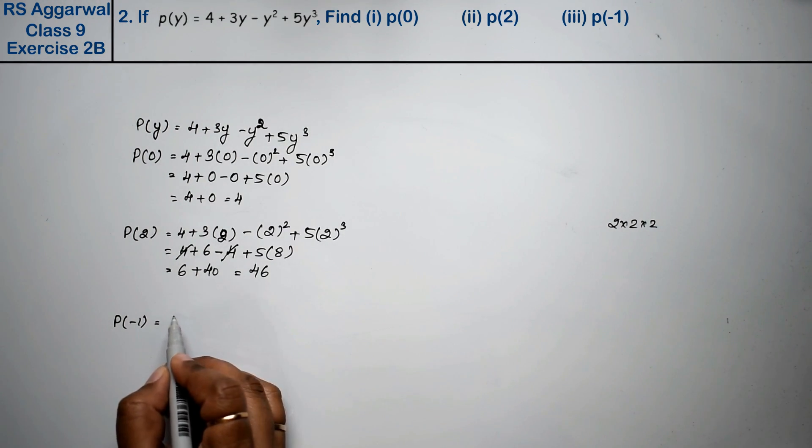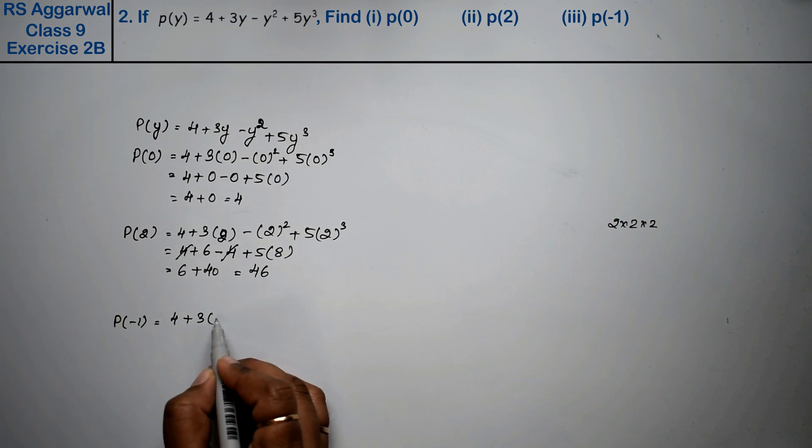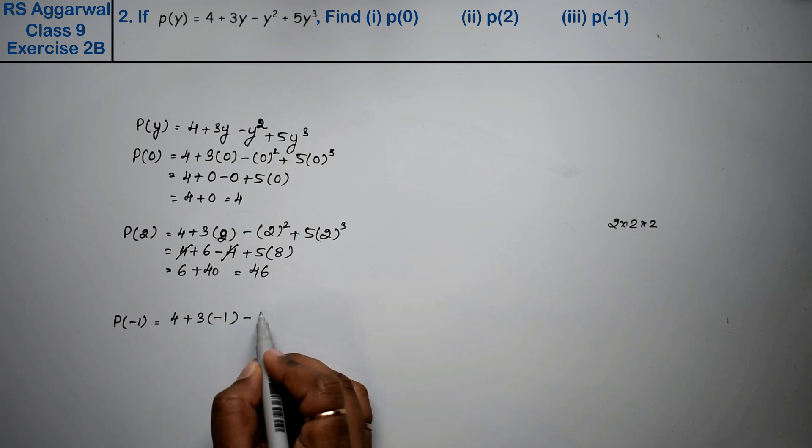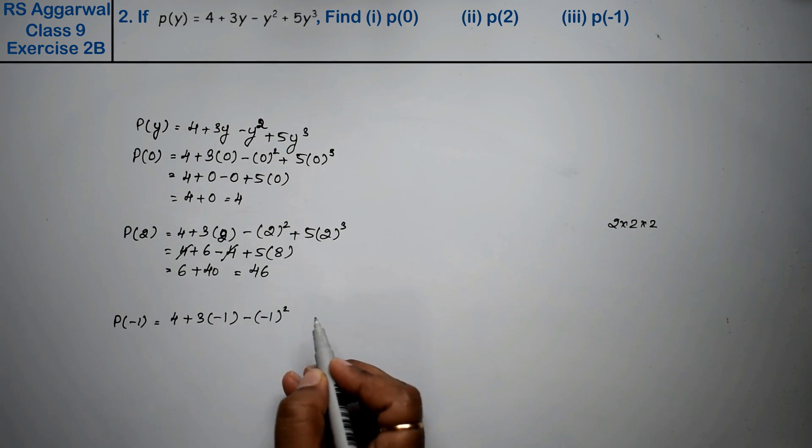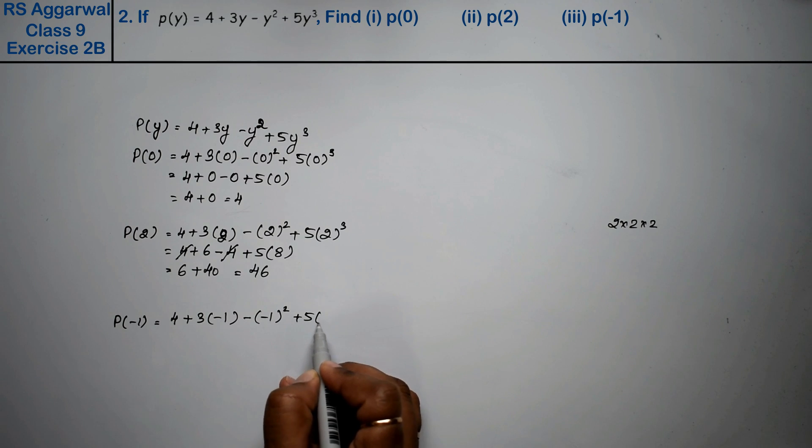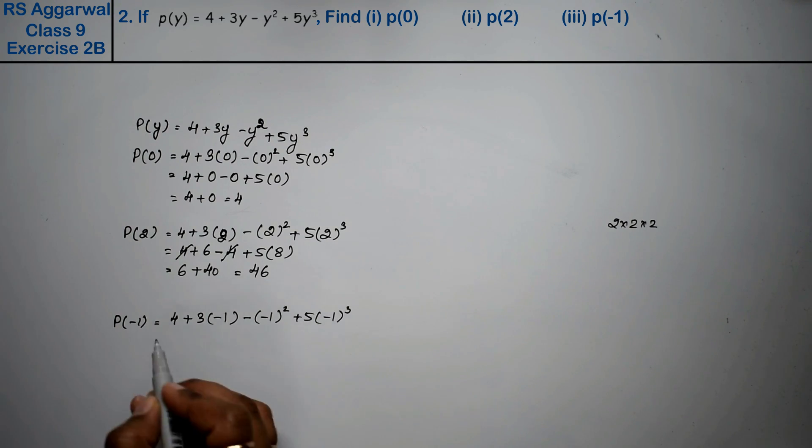Now p(-1). We will put: 4 plus 3 into -1 minus (-1) squared plus 5 into (-1) cubed. So how much is it?